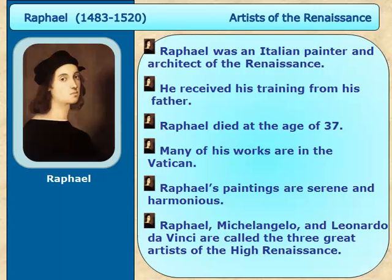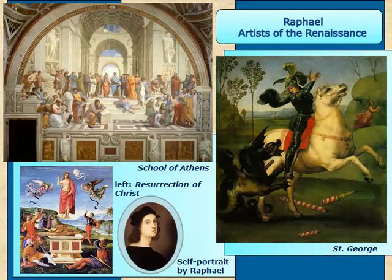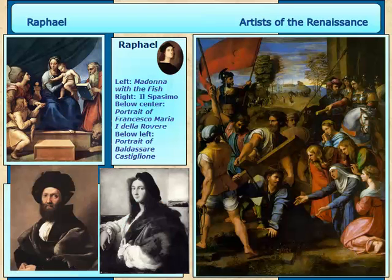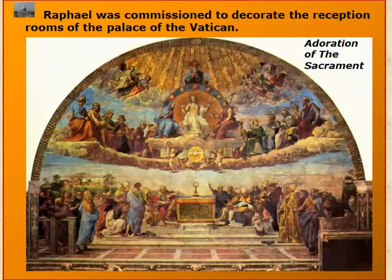So, Raphael is an Italian painter and architect of the Renaissance. He received his training from his father and died at the age of 37. Many of his works are in the Vatican, and his paintings are serene and harmonious. Raphael, Michelangelo, and Leonardo da Vinci are called the three great artists of the High Renaissance. It's so sad this artist died at such a young age — he could have done a lot more had his time on earth been longer.